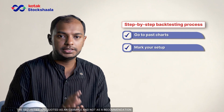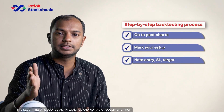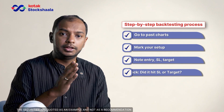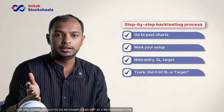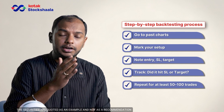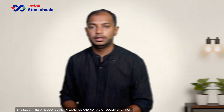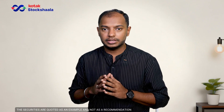The next steps are very simple. We are going to note the entry, stop loss, as well as the target. After which, we check if it hit the stop loss or if it hit the target and how many times. We repeat this for at least 50 to 100 trades so that we know if the strategy is really working out or not. It's like checking a batsman's batting average over the entire season and not just one match.